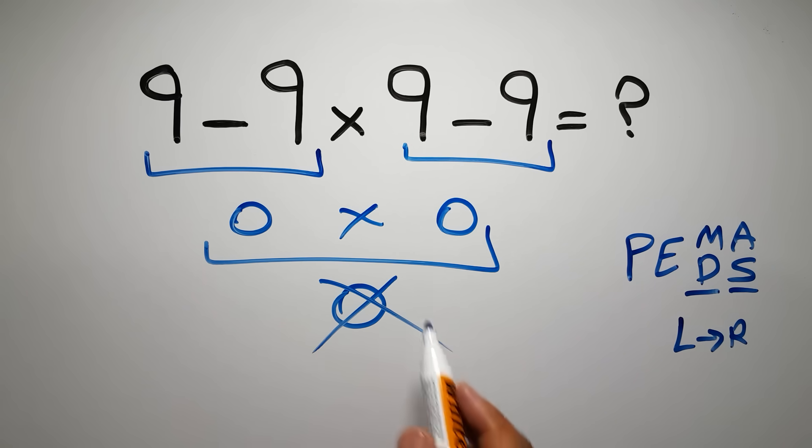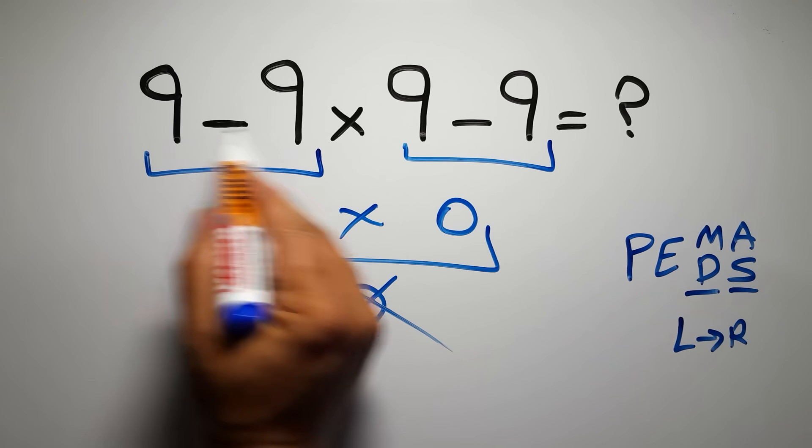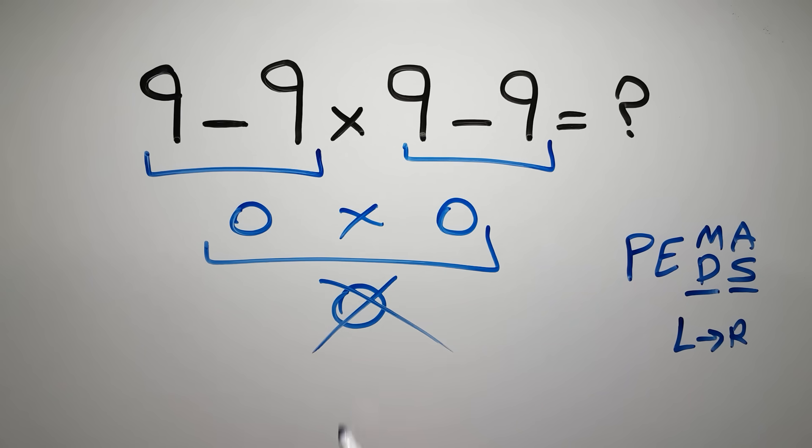In this expression, we have two subtractions and one multiplication. In PEMDAS, multiplication comes before subtraction.